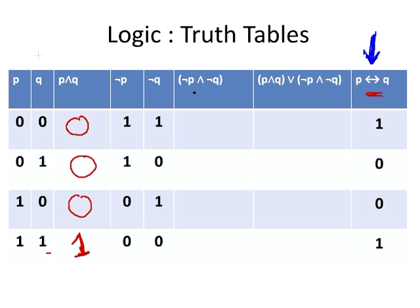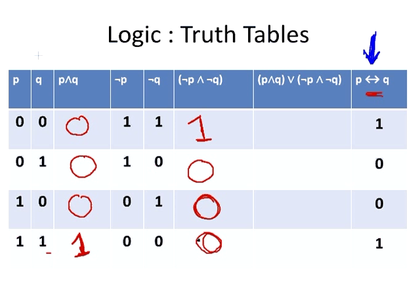The negation of P and the negation of Q — what we're going to do is perform the logical AND operation again. We're going to see where we have a pair of two 1s in the respective columns. In this case, we have 1 and 1 up at the top row. 1 and 0, so we get a 0 here. 0 and 1, we get a 0 here as well. And 0 and 0, we get a 0 here as well.